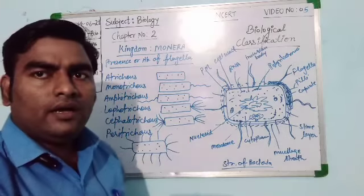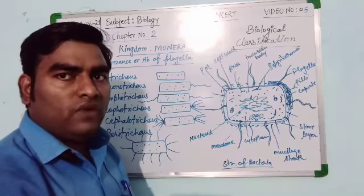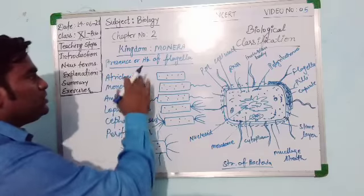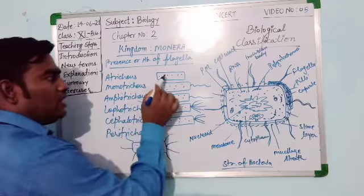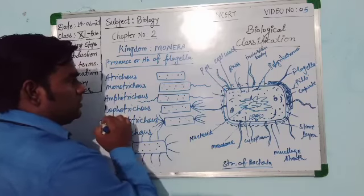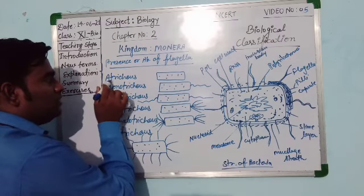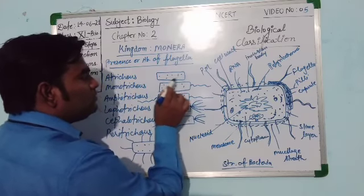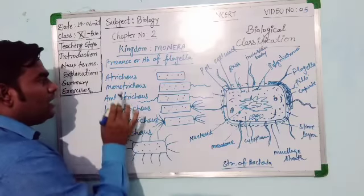We will look at flagellate bacteria and non-flagellate bacteria — the terms used for each type. On the basis of presence or absence of flagella: if the bacteria do not have any flagella, any thread-like structure, such a bacteria is known as Atrichous bacteria. 'A' means absent and 'trichous' means flagella.